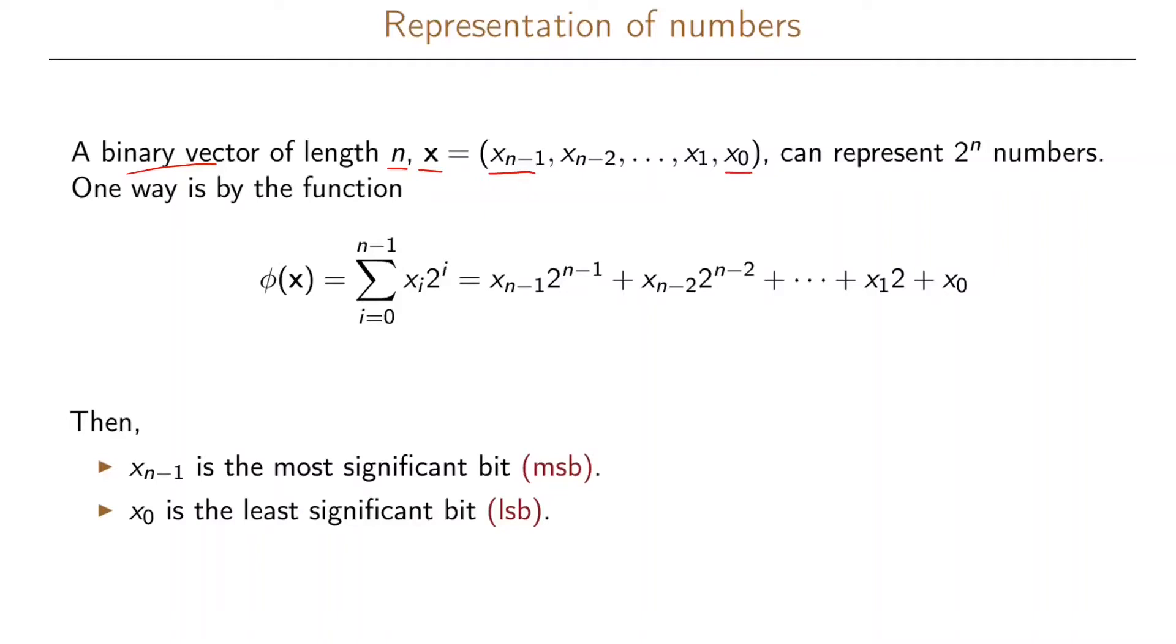This vector can represent 2 to the n different numbers because we have 0 or 1 in each of the entries in the vector and we have size n of the vector. One way of representing this as a number is to use the function that we're going to call phi, and phi of the vector x is now written as the sum where i goes from 0 to n-1 and we have x_i times 2 to the i.